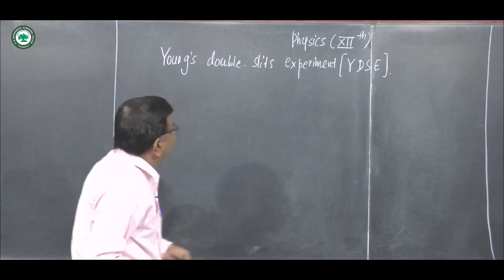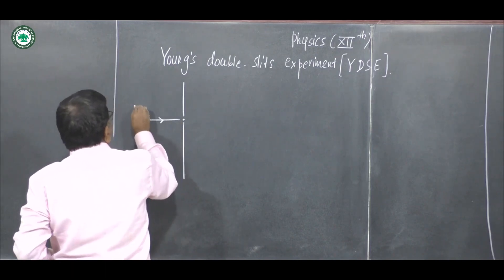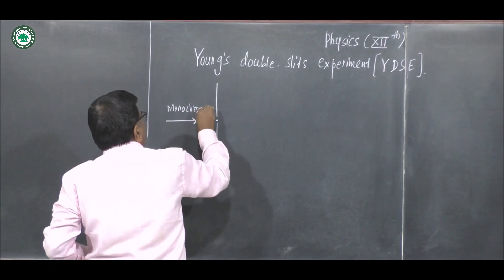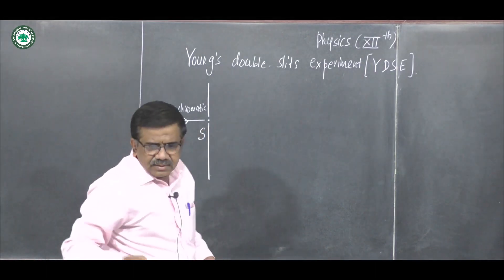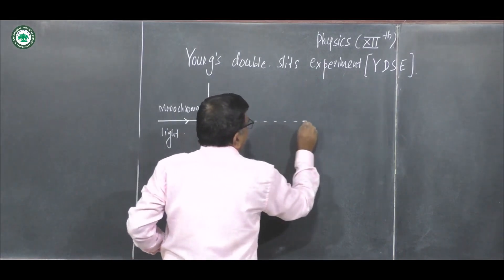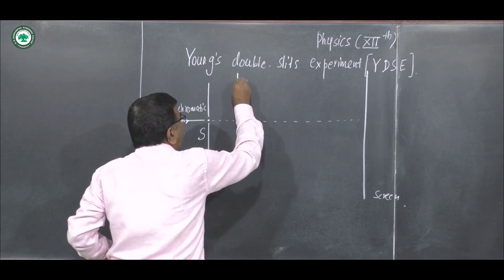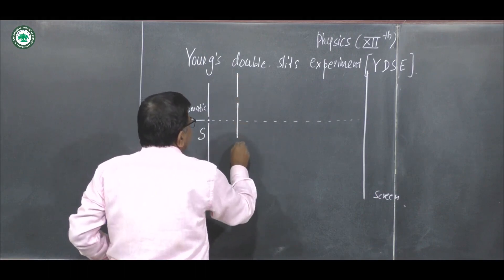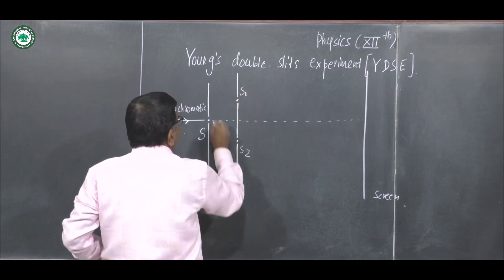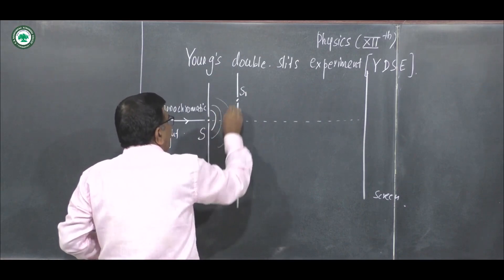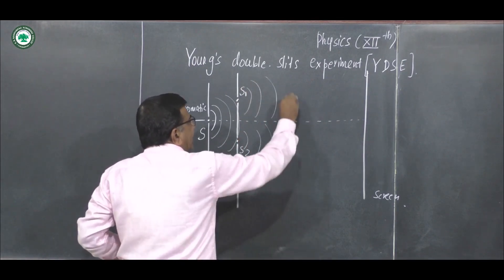In short, the arrangement of this experiment: slit S is illuminated by monochromatic light. This light is incident on a screen at some distance, and on two more slits — S1 and S2. Light travels in the form of alternate crests and troughs from S1, and here also there are alternate crests and troughs, and these crests and troughs overlap with each other.